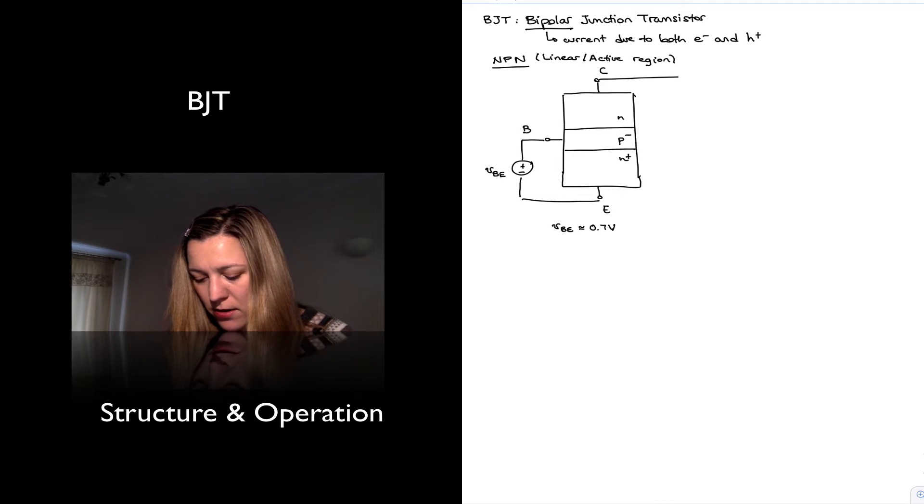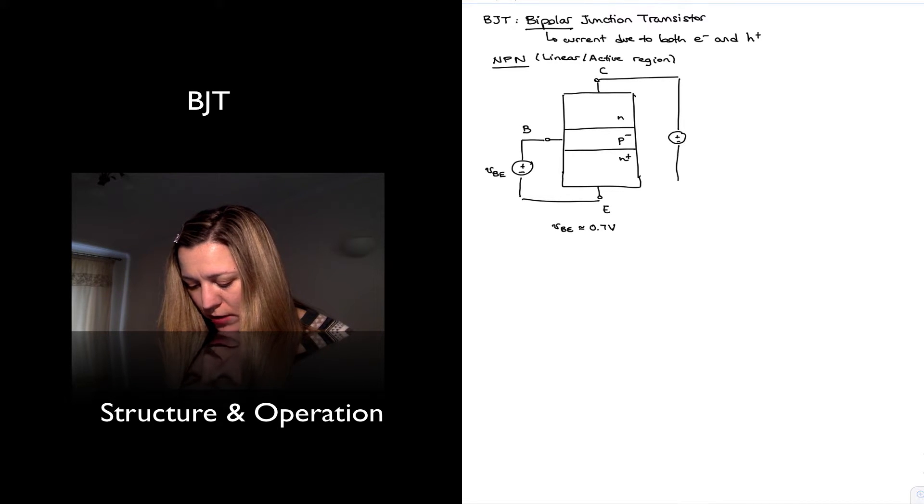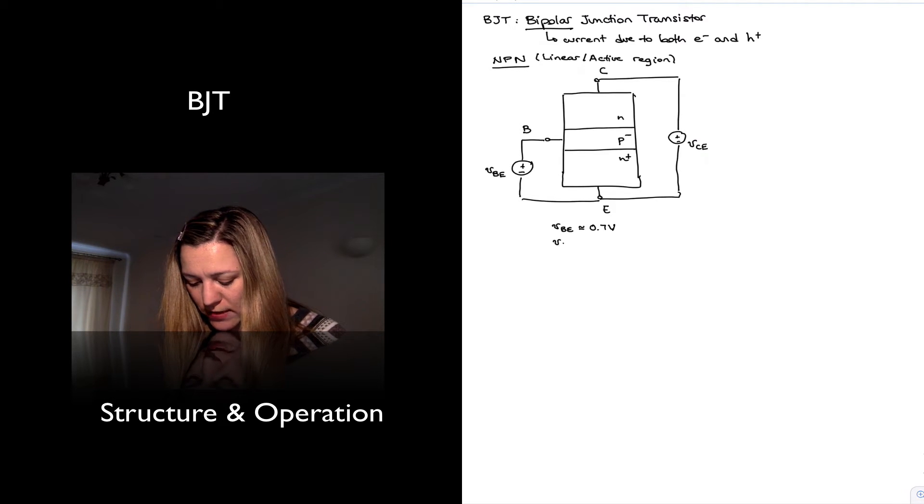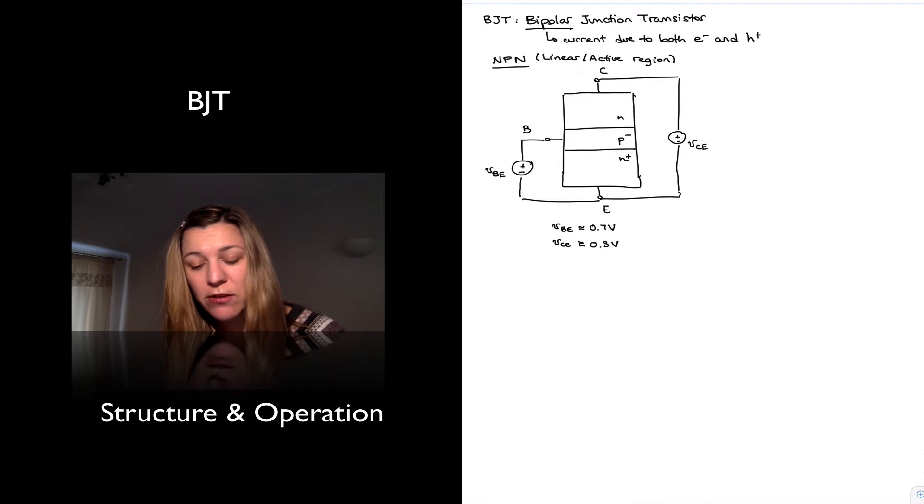And then I'm going to also set a voltage across the collector and emitter, which I will label as VCE. And again, in order for the transistor to be in the linear region, that VCE needs to be at least the saturation voltage, which is around 0.3 volts. So I'm going to say VCE is greater than or equal to that saturation voltage 0.3.